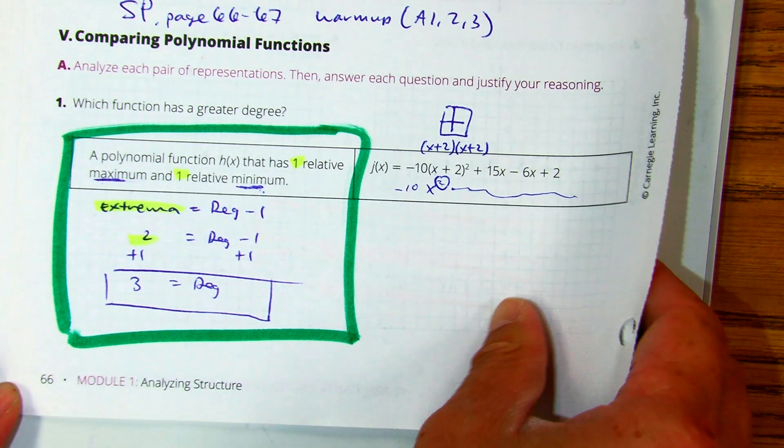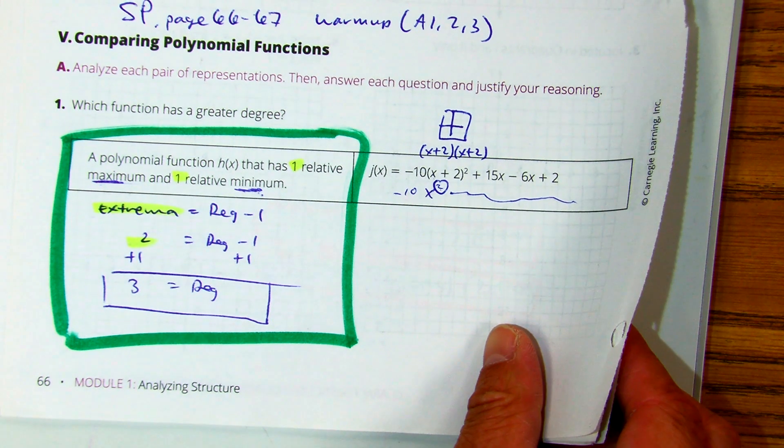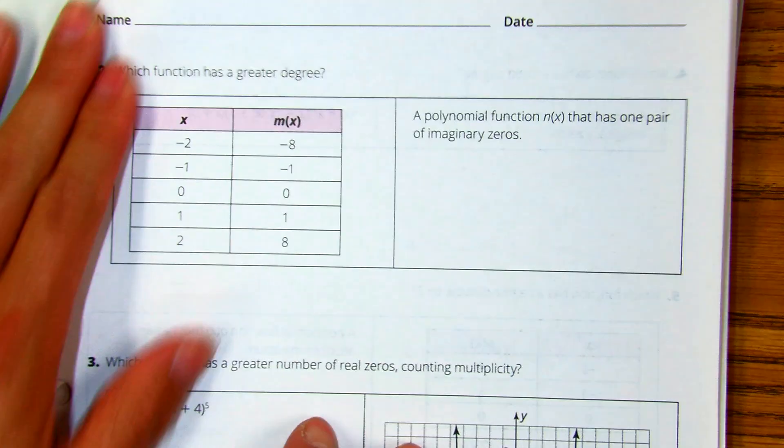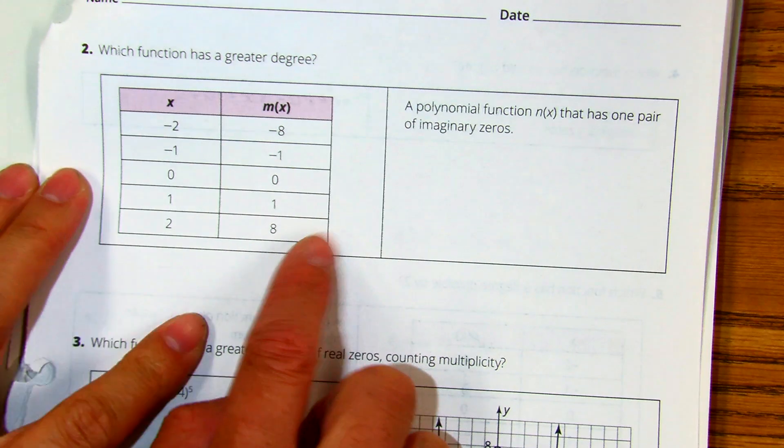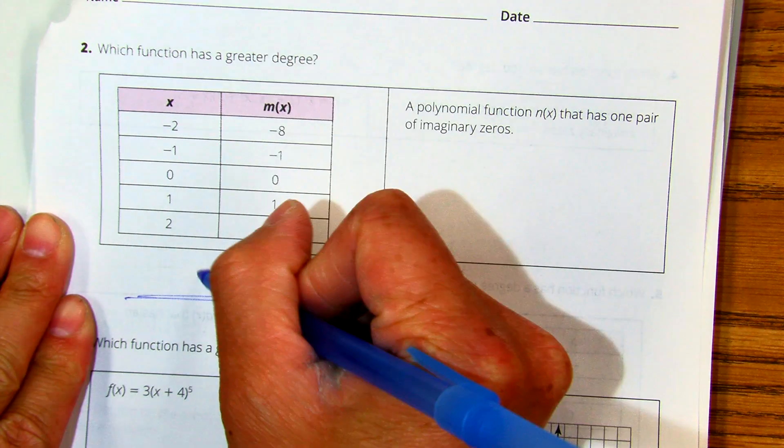Question number two. Which function has a greater degree? The first one you have looks linear. And a lot of students think it's linear when you even graph it.